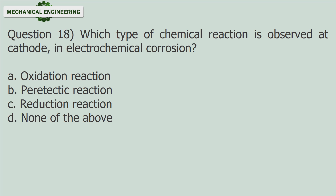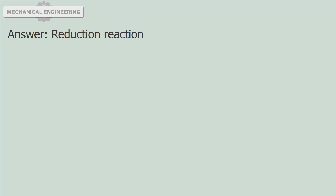Question 18: Which type of chemical reaction is observed at the cathode in electrochemical corrosion? A. Oxidation reaction. B. Peritectic reaction. C. Reduction reaction. D. None of the above. Answer: Reduction reaction.